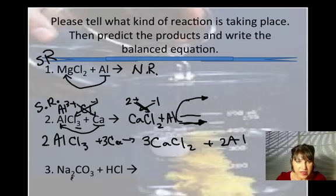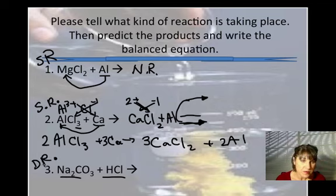In this reaction, where I have two compounds reacting with one another, then I know this is a double replacement. So my cations are going to trade places here. They're going to switch partners. So the hydrogen is going to partner with the carbonate.